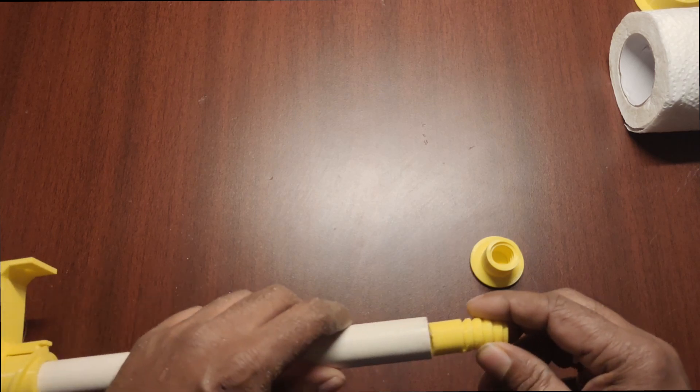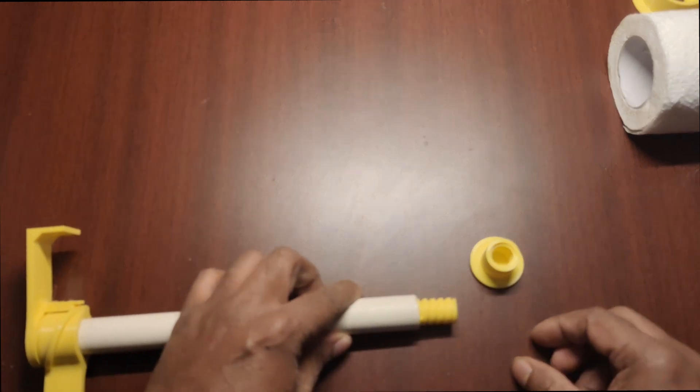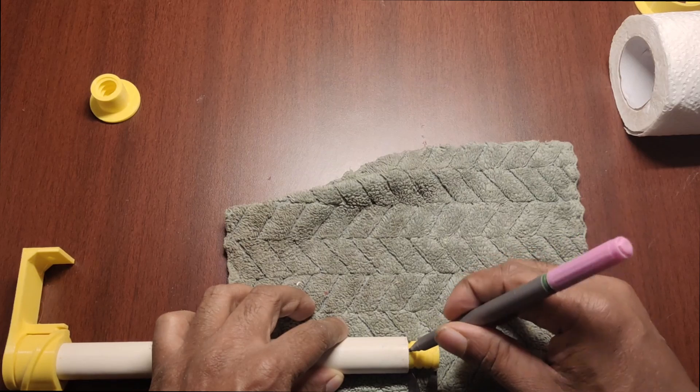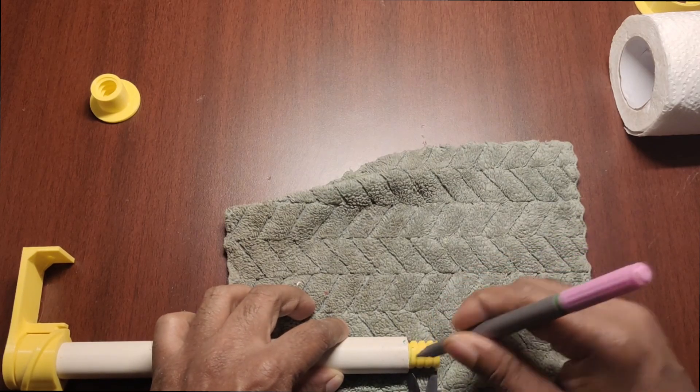Our next step is to attach the thread for the end cap. These screw threads are printed in anti-clockwise direction to counter the rotation of tissue roll on the rod.